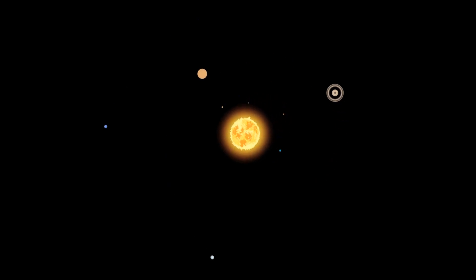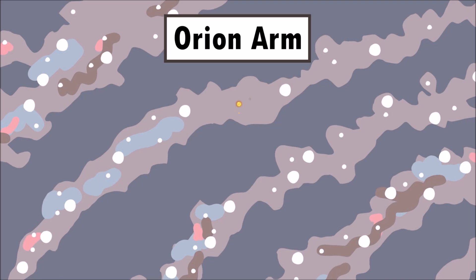Our solar system lies in the outer edges of one of the spiral arms called the Orion Arm!